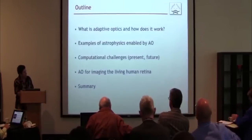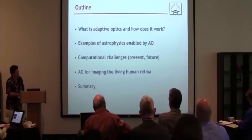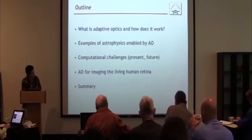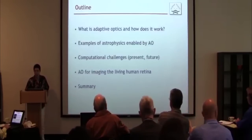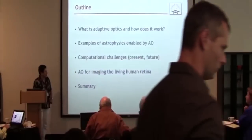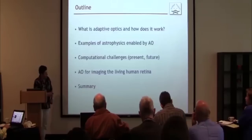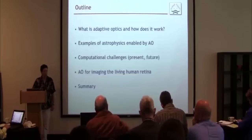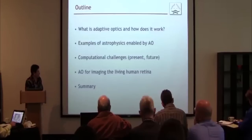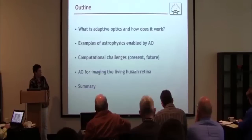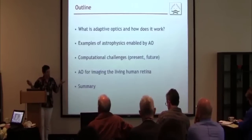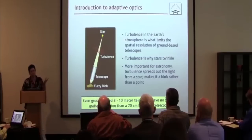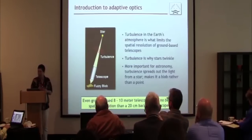Here's an outline. I'll talk about what adaptive optics is and how it works. I'll give some examples of the astrophysics that's been enabled by adaptive optics — just a taste, not a comprehensive survey. I'll talk about computational challenges, which are quite different from what Mike talked about and I think equally interesting. And then I'll talk about adaptive optics for imaging the living human retina, which is a whole different topic. Please feel free to interrupt me with questions, because I think it wakes us all up.